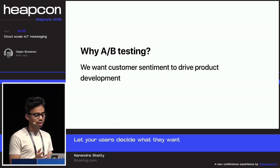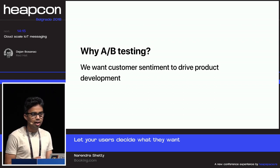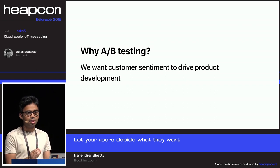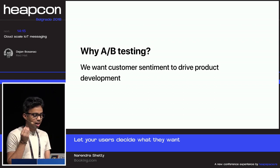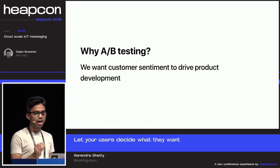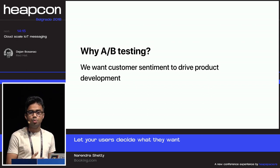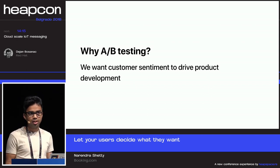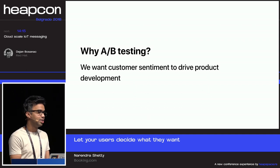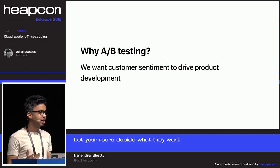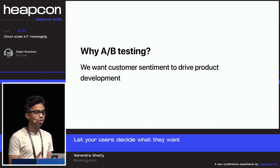We want customer sentiment to drive product development. It's simple: if customers like what they're seeing, give more of that. If they don't like certain things, give less of that. How do you know which the customer likes? It's only by A/B testing.